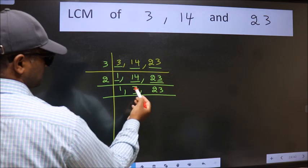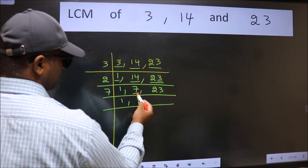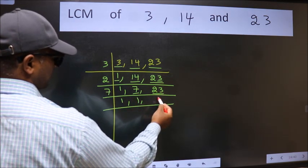Now here we have 7. 7 is a prime number so 7 goes into 7 once. The other number 23 is not divisible by 7 so we write it down as it is.